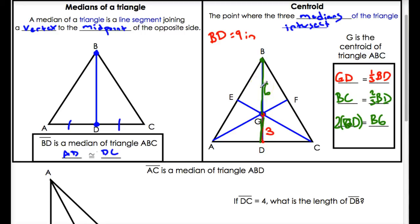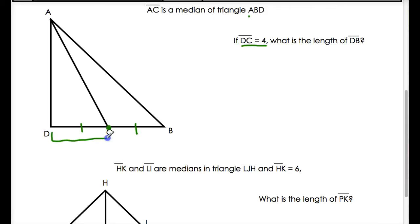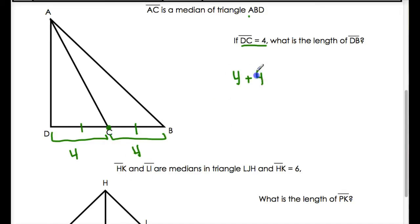Those are the facts you've got to know for this lesson: what's a median, what's a centroid, and you're good to go. Now let's practice. The first question: AC is the median of triangle ABD. If DC equals four, what is the length of DB? Since AC is the median, C is the midpoint, so DC is congruent to CB. DC equals four, so CB also equals four. To find DB, we add four plus four, which equals eight.